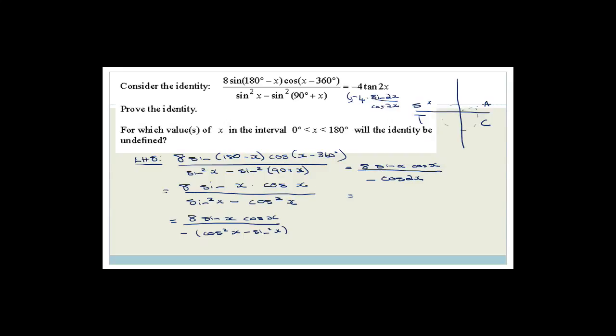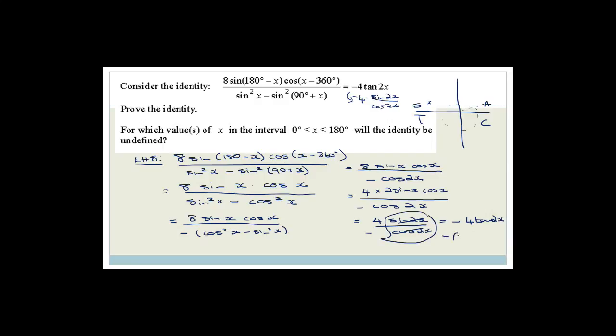We now have 8 sine x cos x divided by negative cos 2x. We convert the numerator: 8 sine x cos x equals 4 times 2 sine x cos x equals 4 sine 2x. So we get 4 sine 2x over negative cos 2x, which equals negative 4 sine 2x over cos 2x, and sine over cosine is tan — giving us negative 4 tan 2x, which equals the right-hand side. Proved.